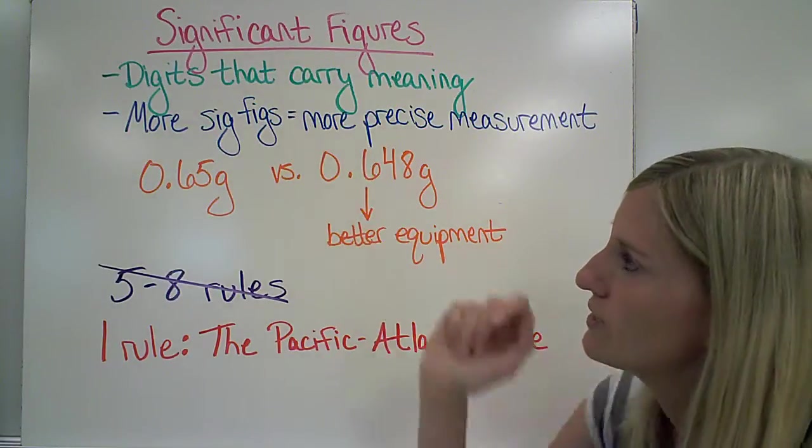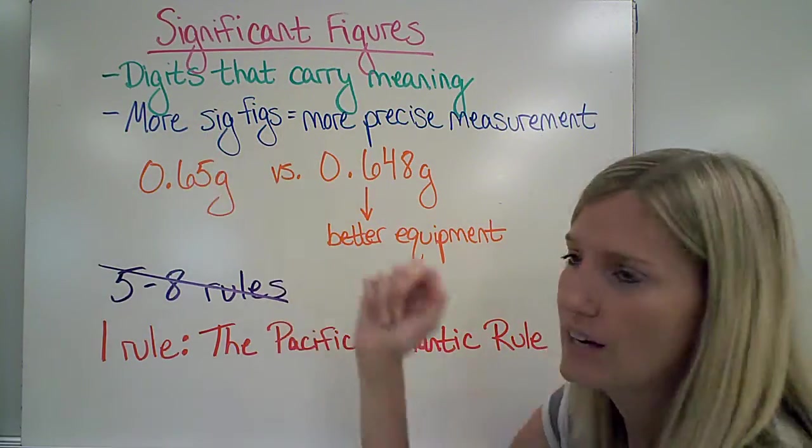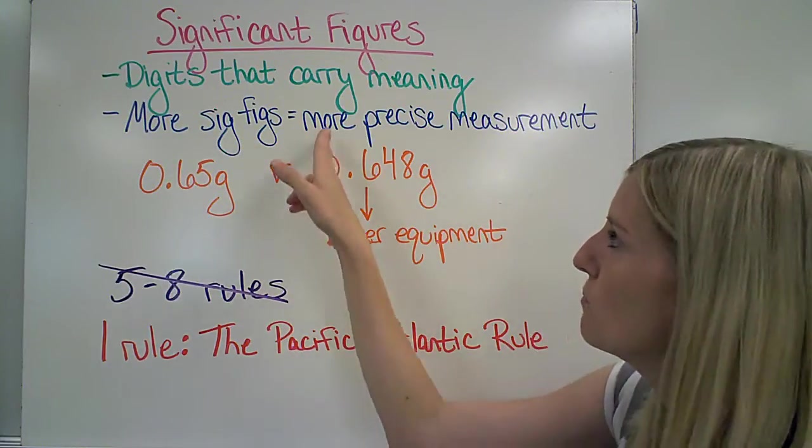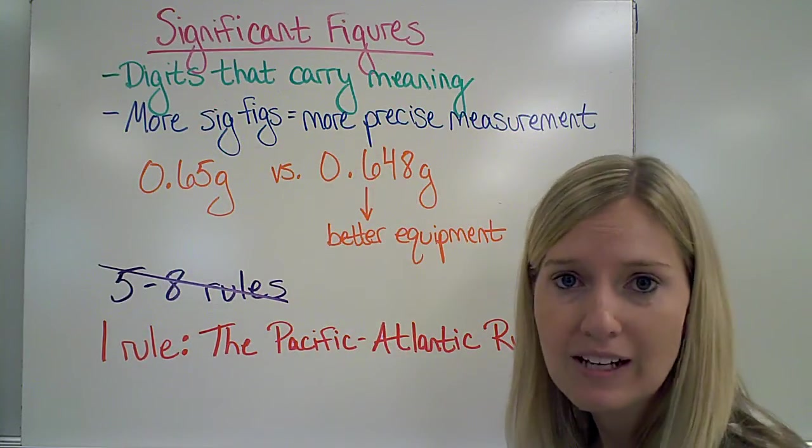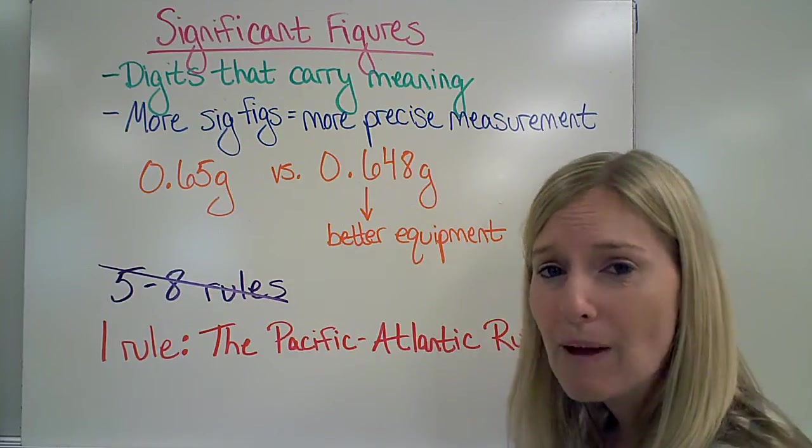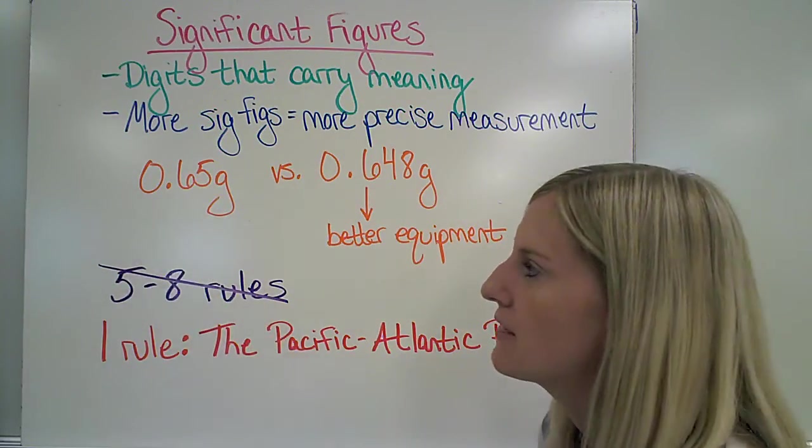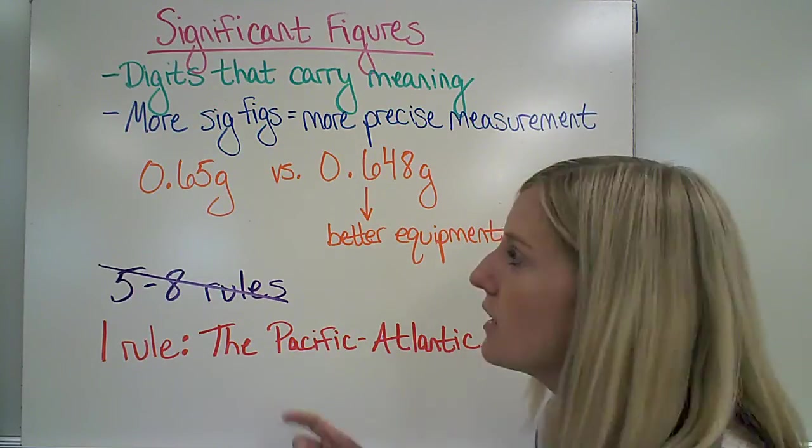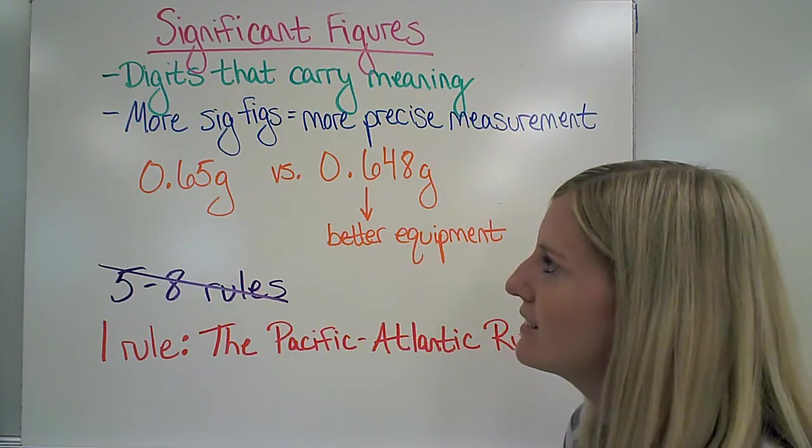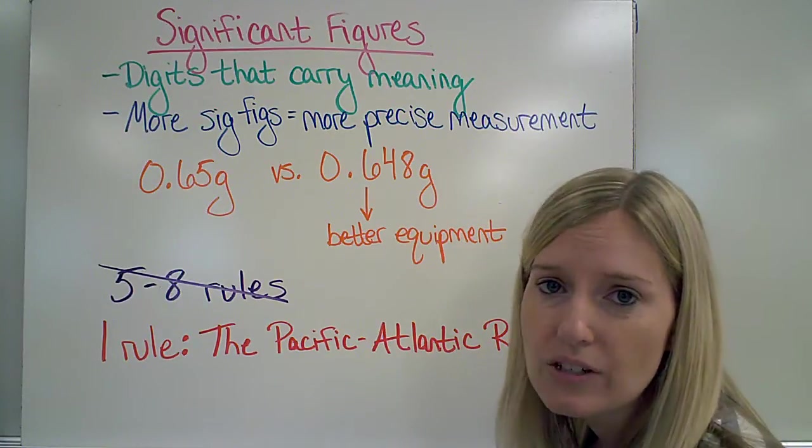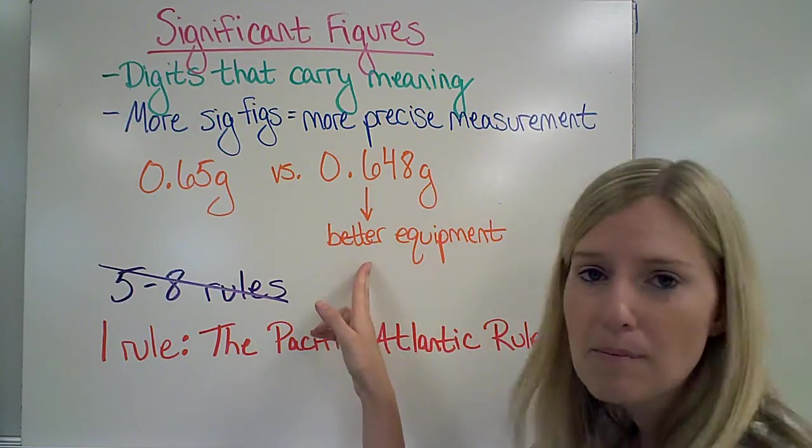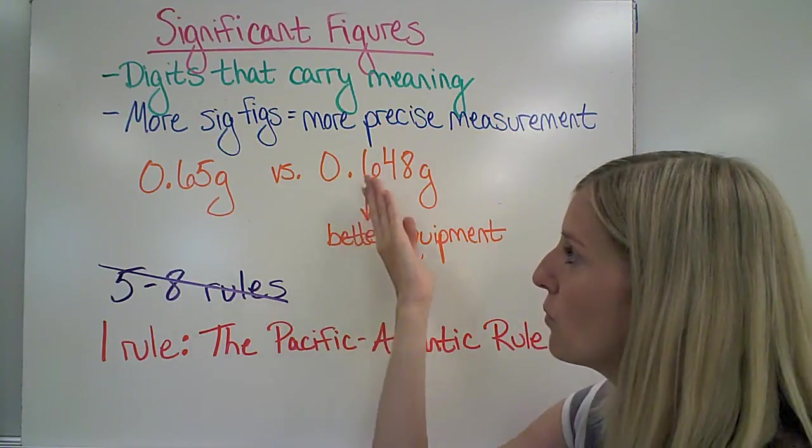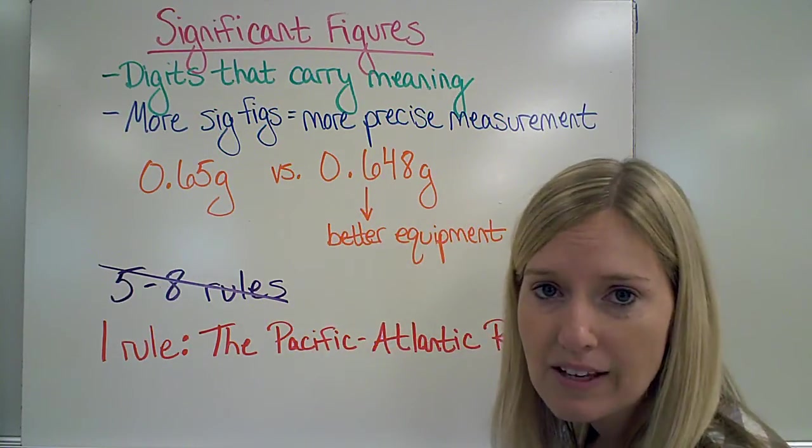Significant figures gets abbreviated as sig figs. The more significant figures a measurement has, the more precise that measurement is. If I have two balances, and one tells me that the mass of an object is 0.65 grams, and the other tells me that it is 0.648 grams, this one is the better piece of equipment. It is more precise. It told me more information about the mass of that object.